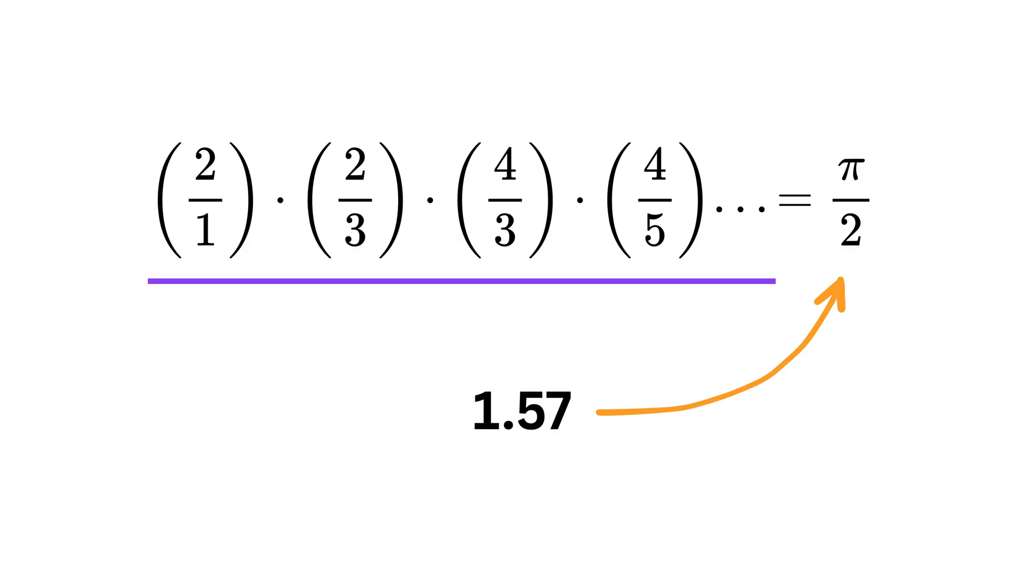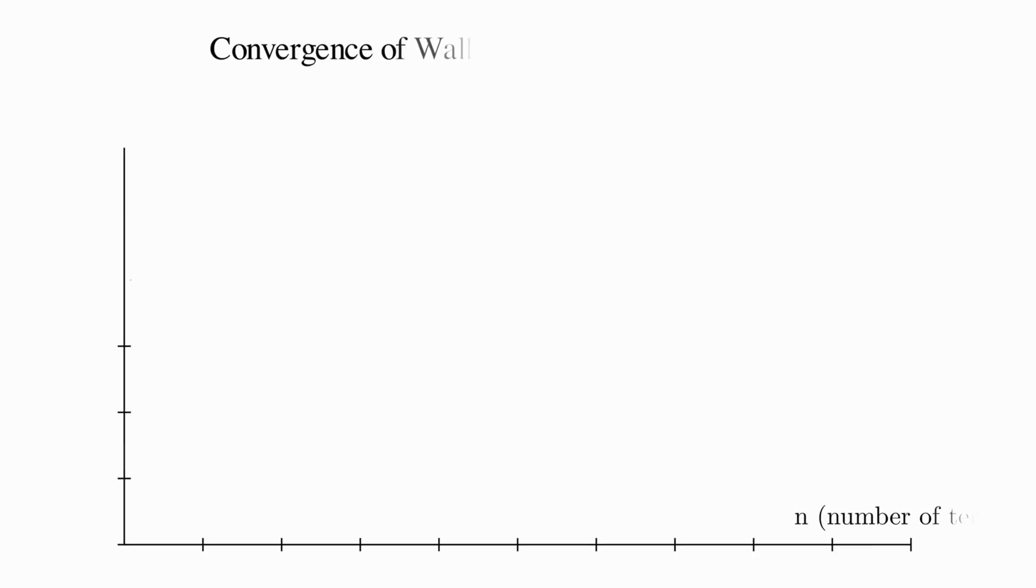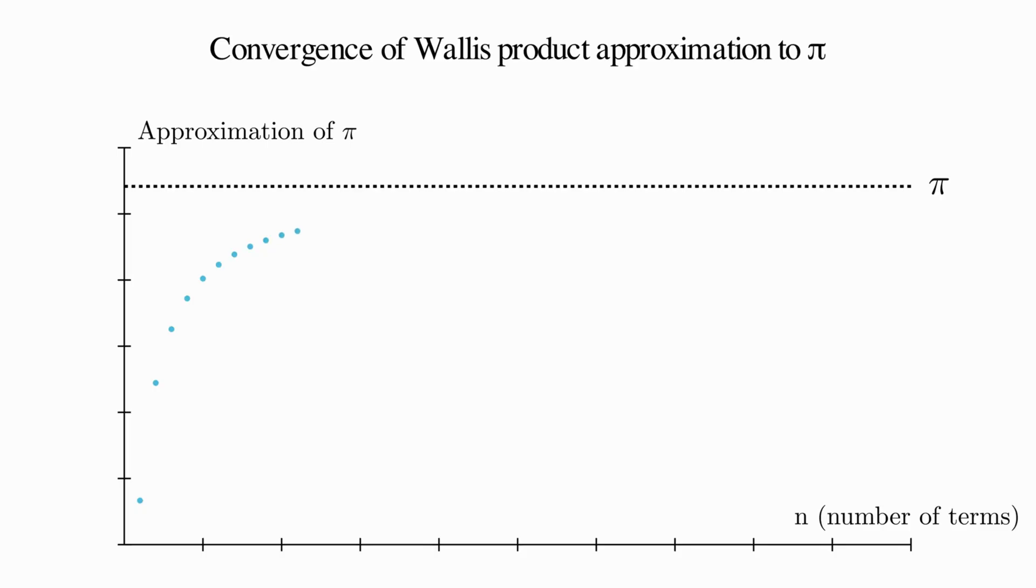And if you double it, you will see it closing in towards pi. I will plot the graph between the number of terms and the product value times 2, and you can see how beautifully it converges to pi.